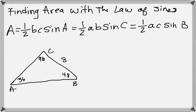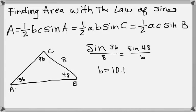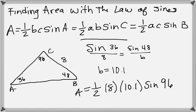I'm going to use the Law of Sines to find the missing side length. Let's say we're going to find side length B. So this is how it works out. Side length B is across from our 48, and it turns out to be 10.1. Sine of 36 over 8 equals sine of 48 over B. Work that out and you get 10.1.